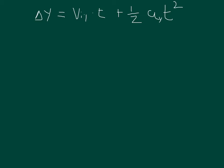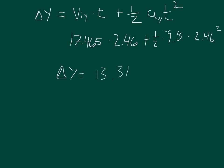The initial velocity in the Y direction was 17.465 meters per second. The time was 2.46, and then we add that to one-half times negative 9.8 meters per second squared times 2.46 squared. That gives an answer for delta Y equal to 13.31106 meters. Since the goalpost is only a little over 3 meters, we know this definitely cleared the goalpost.